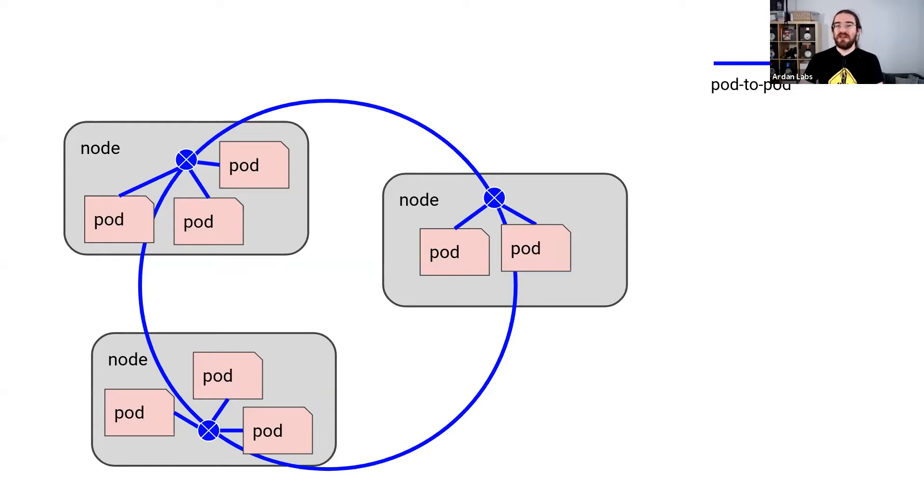So when I want to have communication between the nodes here, the simplest thing we could do - when you have this little, it's kind of popular to have a little Raspberry Pi cluster at home.